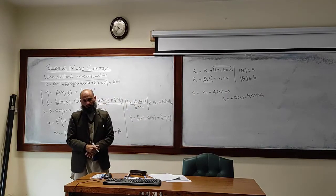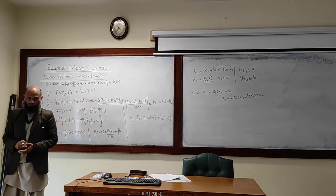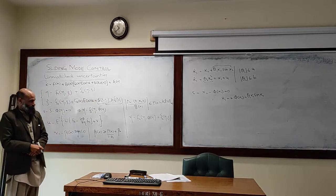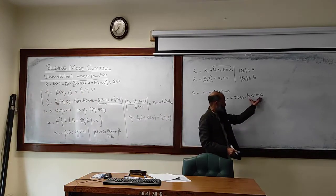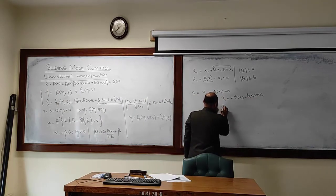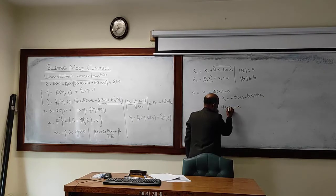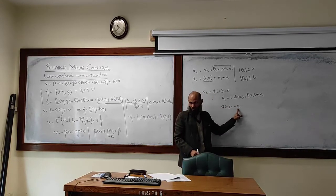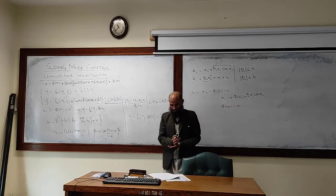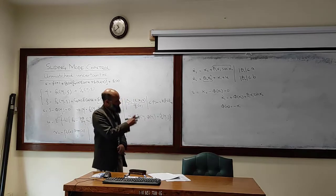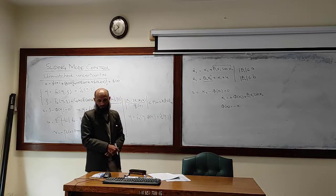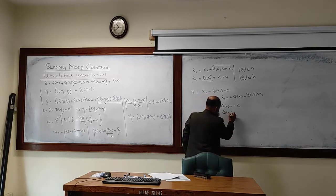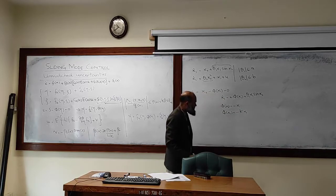Phi of x1 should be selected such that the equilibrium point for this system is asymptotically stable. If we did not have any uncertainty, phi of x could be selected to be equal to minus x1, and x1 dot equals minus x1 would be asymptotically stable. Now, since we also have uncertainty, we can select phi of x1 equal to minus k times x1, and we need to determine k.